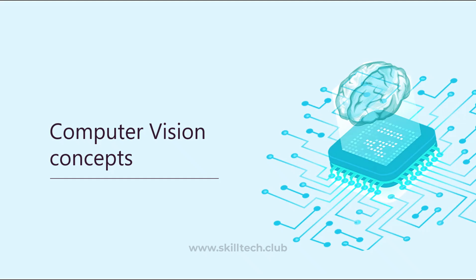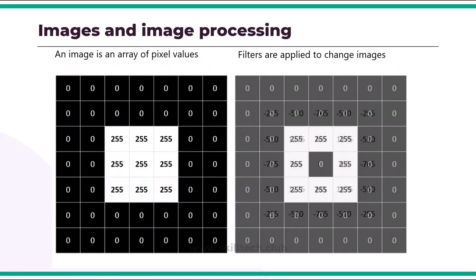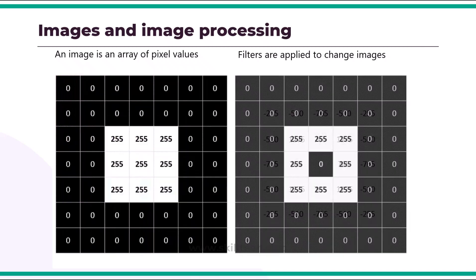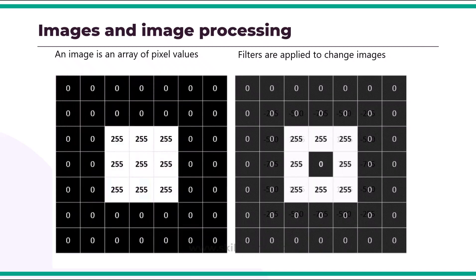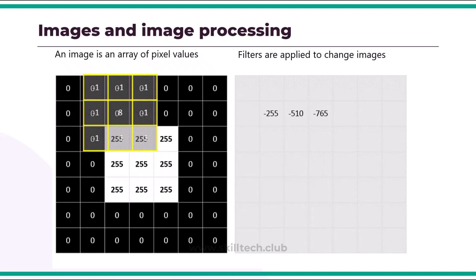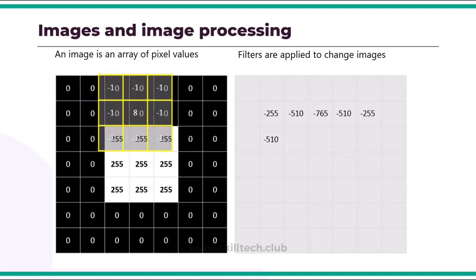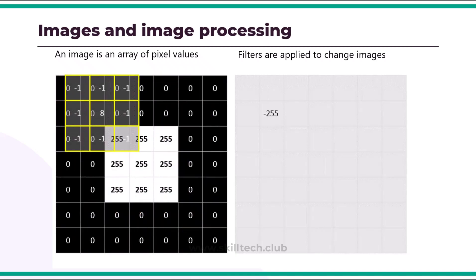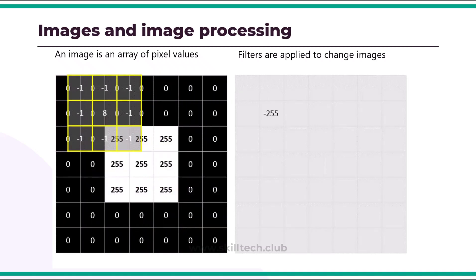Let's start with computer vision concepts and understand how computer vision works, followed by demos. As you can see on screen, this shows how image processing happens in Azure AI Vision. To a computer, an image is an area of numeric pixel values. The area consists of seven rows and seven columns, representing the pixel values for a seven by seven pixel image — this is mostly what is used in image resolutions.